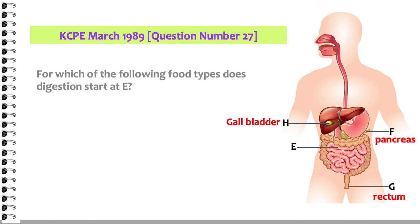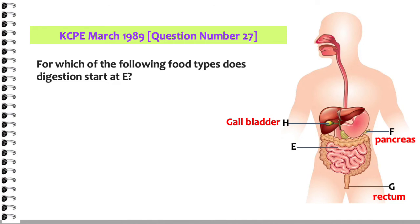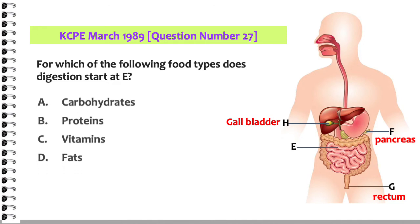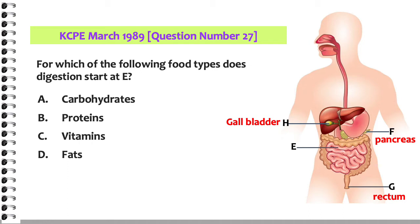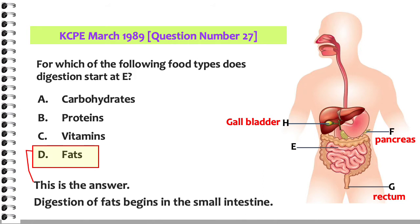For which of the following food types does digestion start at E? Is it carbohydrates, proteins, vitamins, or fats? This is the answer: digestion of fats begins in the small intestine.